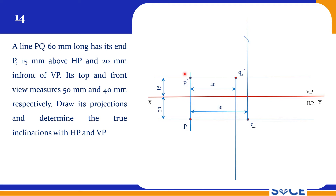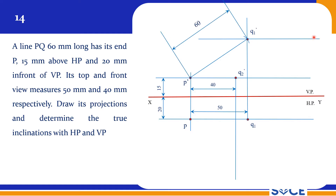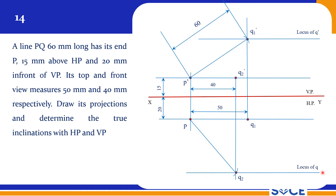From P dash with 60mm radius, you cut an arc and you will get Q1 dash straight away, giving you the locus of Q dash. Similarly, from P, cut the arc with the same 60mm as radius, and you will get Q2 — giving you the locus of Q.